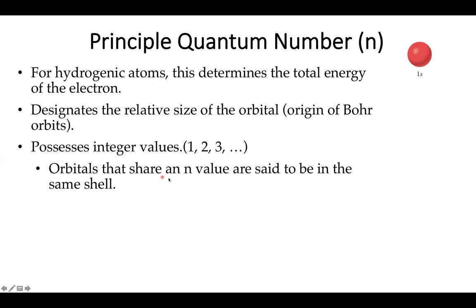If orbitals share an n value, they're said to be degenerate as they'll share the same energy. Orbitals that have the same n value are also said to have occupied a single shell.